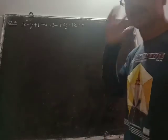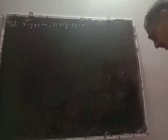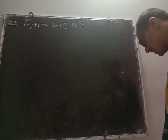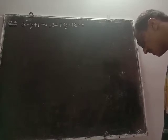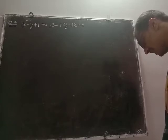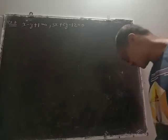This is question number 7. Read the question from the textbook. Draw the graph of equation x minus y plus 1 equal to 0 and 3x plus 2y minus 12 equal to 0. Determine the coordinates of the vertices of the triangle formed by these lines and the x-axis and shade the triangular region.